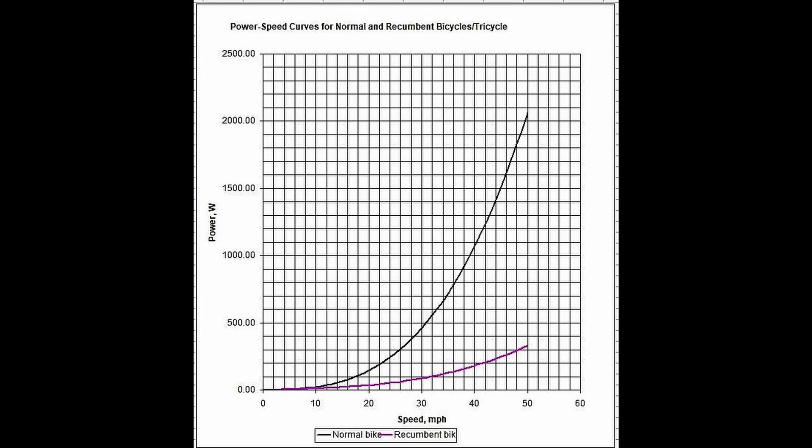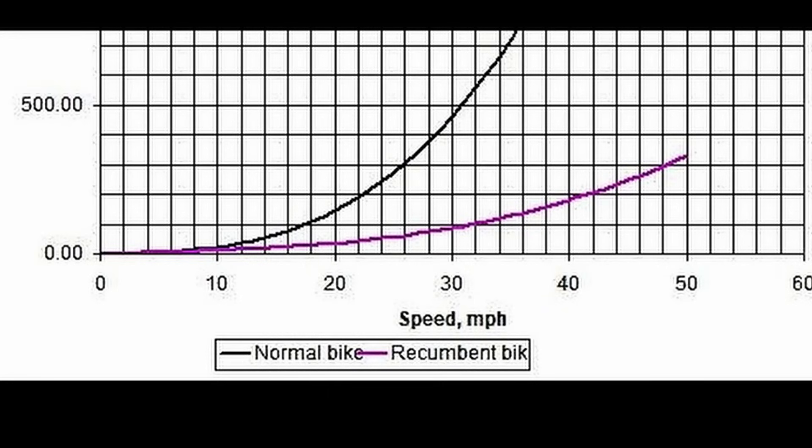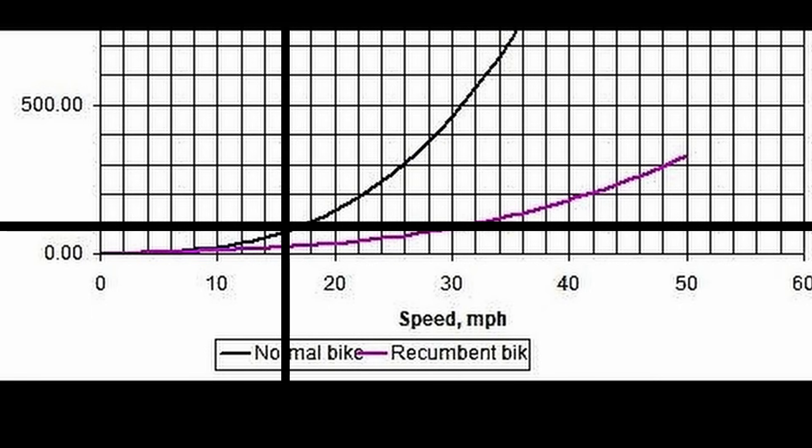Here are the power speed curves for a normal upright bike compared with a streamlined velomobile. With a rider on an upright bike working at a reasonably energetic 100 watts, the bike will achieve about 18 miles an hour on the flat. A streamlined recumbent will be going well over 25 miles an hour at 100 watts.